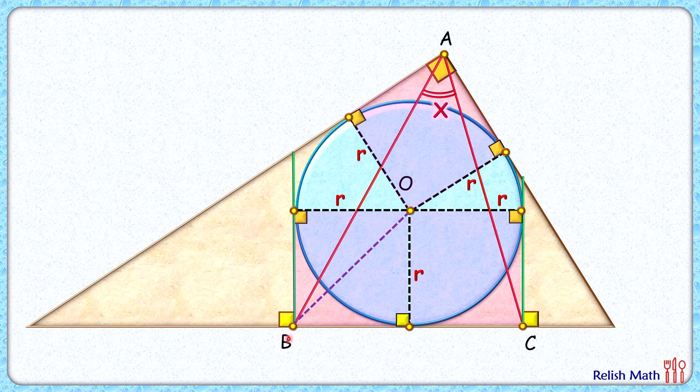As the squares are congruent to each other, each of side r centimeters, their diagonal lengths will also be equal. Or we can say points A, B, C are equidistant from point O.